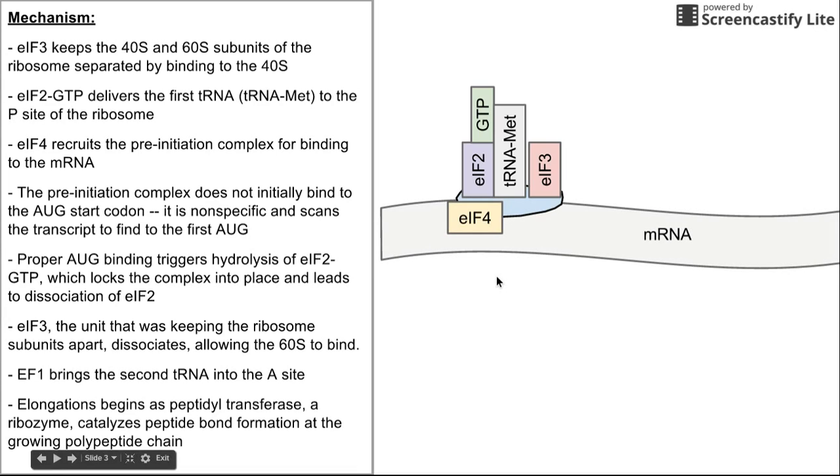The entire pre-initiation complex binds to the mRNA nonspecifically and scans back and forth looking for the start codon. Once it finds the first AUG, GTP is hydrolyzed and initiation factor 2 dissociates.